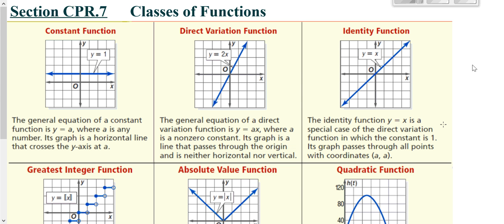Your identity function, which we haven't really talked about a whole lot, is a special line and a special direct variation. So it has to go through the origin and it has to have a slope of one.